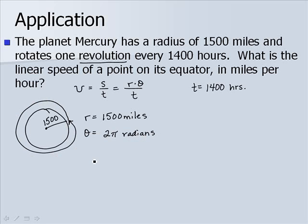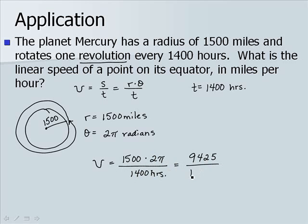So if we plug in all of these values into our linear speed equation, we have 1,500 miles times 2π radians divided by 1,400 hours. So we'll end up with approximately 9,425 miles over 1,400 hours, which gives us about 7 miles per hour. So our planet Mercury has a linear speed of about 7 miles per hour, or a point on its equator does.